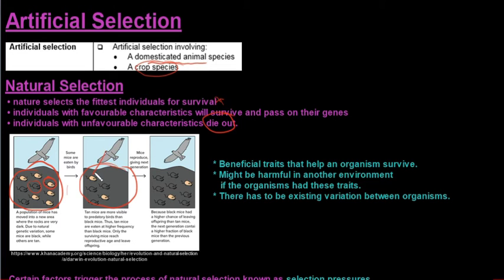So obviously there's going to be a selection pressure here with a predator. Now this hawk is obviously going to see the white mice first because the black mice are well camouflaged by the environment, which means that more white mice are going to be caught and they are going to be less likely to pass on their characteristics to their offspring.